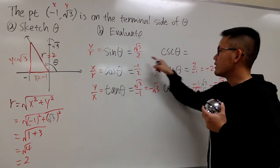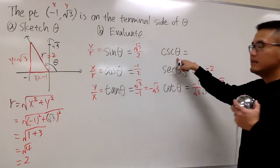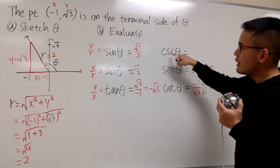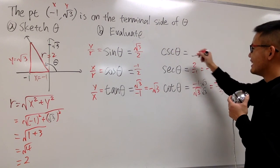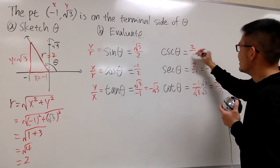Last one. Here, we do the reciprocal of that. This is r over y. Right, r over y is the reciprocal of that. Anyways, 2 over square root of 3.